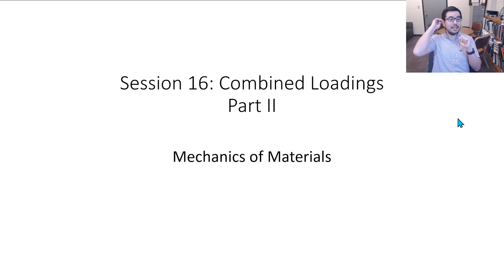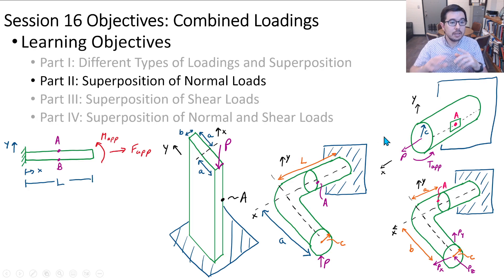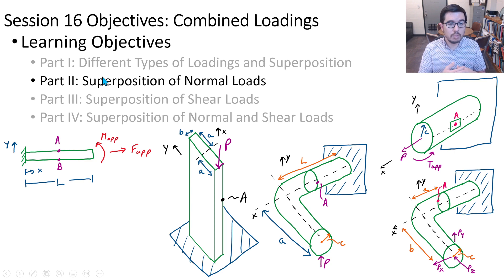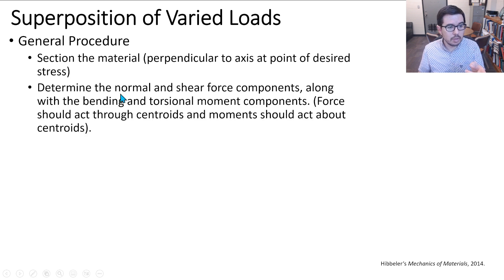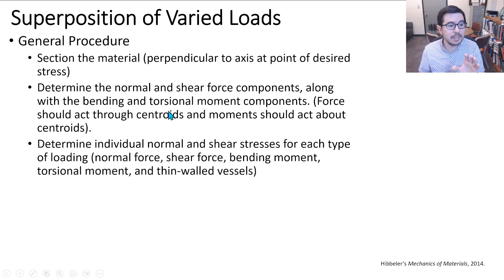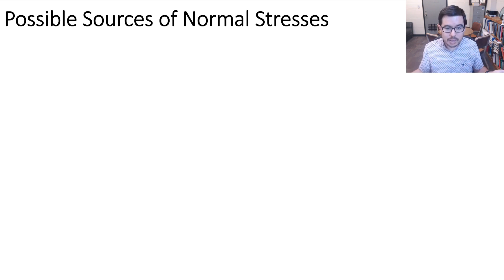Welcome back to session 16 on combined loadings. This is our second part where we're going to discuss the superposition of normal stresses and look at how we can calculate the state of normal stress at a particular element. Here is the general procedure: section the material, determine the normal and shear force components, determine individual normal and shear stresses, and then add the normal stresses to each other.